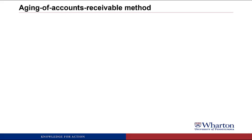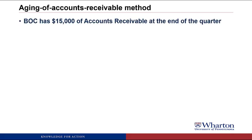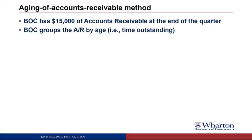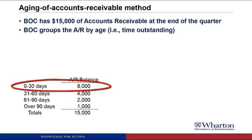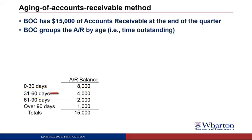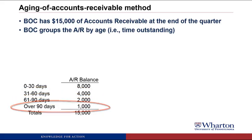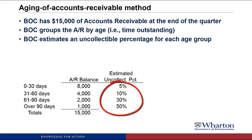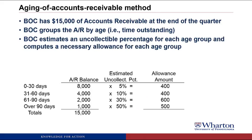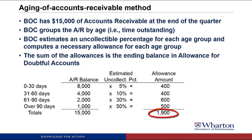Now let's do the same estimate using the aging of accounts receivable method. We start with BOC's accounts receivable of $15,000 at the end of the quarter and group these by age — how long they've been outstanding. Of the $15,000: $8,000 have been outstanding for less than 30 days, $4,000 from 31 to 60 days, $2,000 from 61 to 90 days, and $1,000 outstanding for over 90 days. BOC estimates an uncollectable percentage for each age group, and as you'd expect, the percentage gets bigger the longer the receivables have been outstanding without being collected. We compute the necessary allowance for each group by multiplying the balance by the percentage, then add all the allowances together to get the ending balance in allowance for doubtful accounts: $1,900.